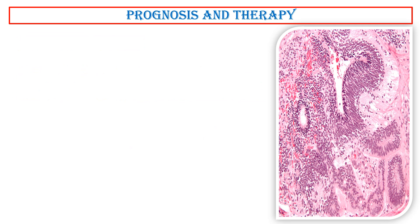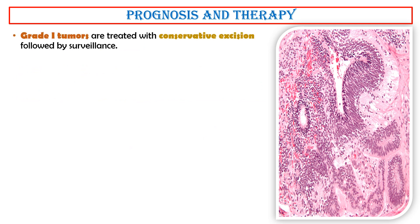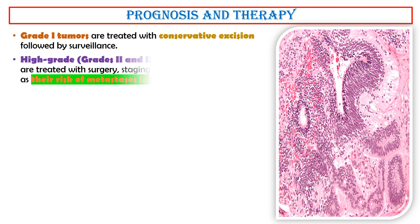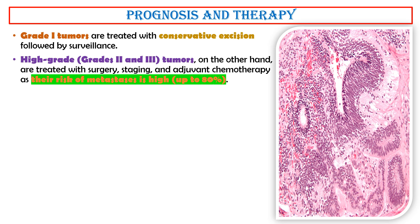Prognosis and therapy. Grade 1 tumors are treated with conservative excision followed by surveillance. High-grade tumors — grades 2 and 3 — on the other hand, are treated with surgery, staging, and adjuvant chemotherapy, as their risk of metastasis is high, up to 80%. The 5-year survival rate for stage 1 tumors is almost 100%.